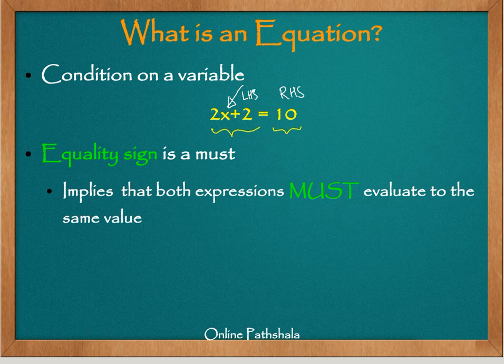So the important thing that you note here is that this equality sign, this is a must. Equality sign has to be present in an equation. And it also implies, this equality sign, it also implies that both the expressions must evaluate to the same value. The value of this and this should not be different. It has to be same, and that is why we call it as a condition on variable.